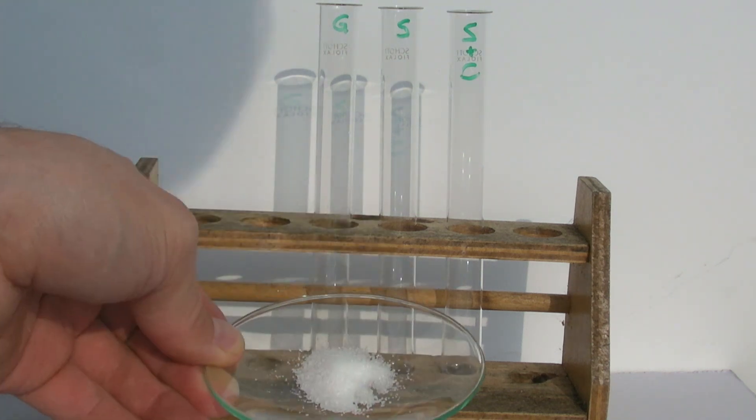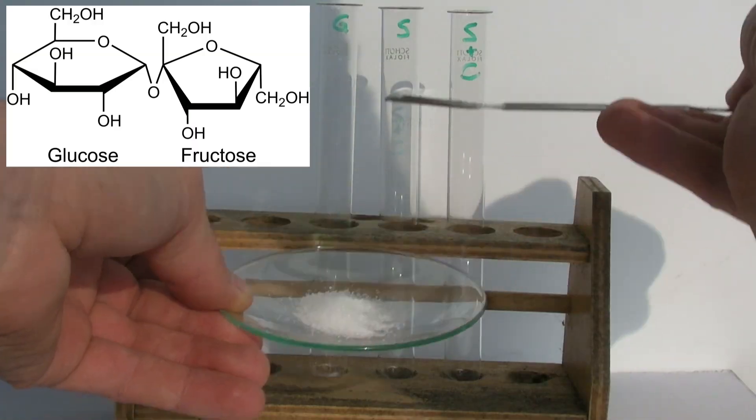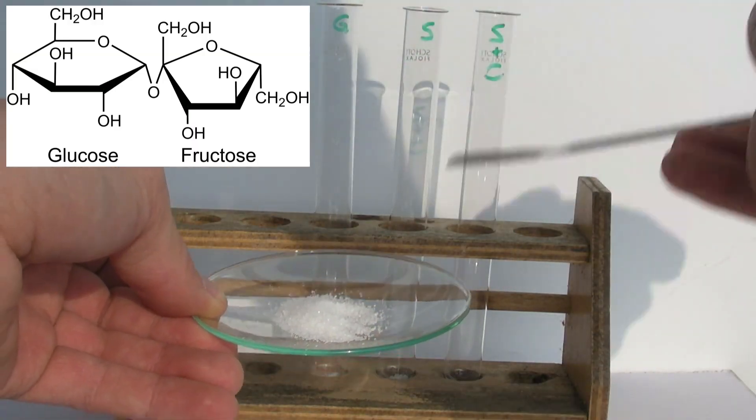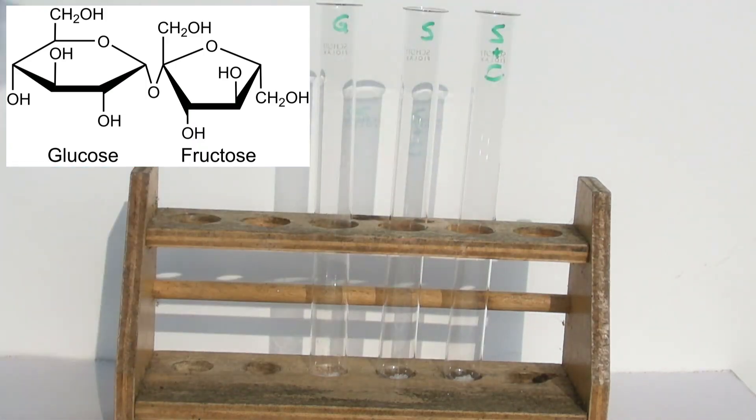To the other two test tubes, sucrose is added, which is also known as household sugar. This is a disaccharide or double sugar. It is made of glucose and fructose, which are connected by a glycosidic bond.